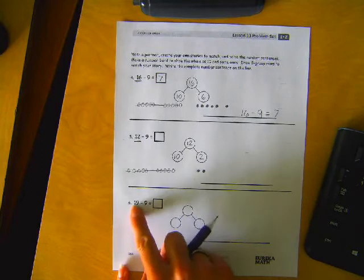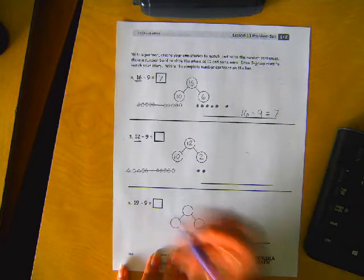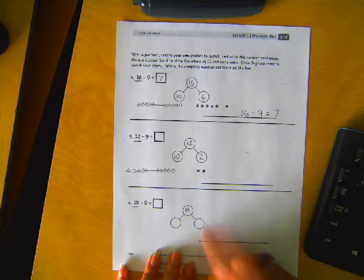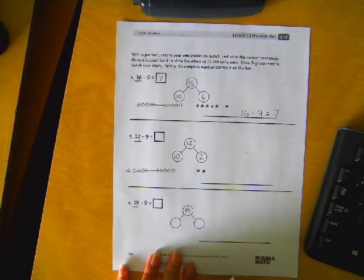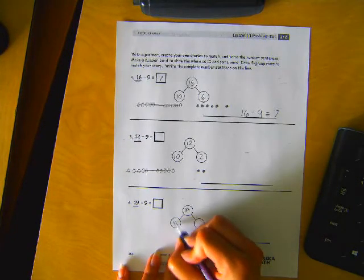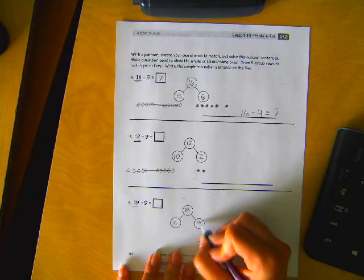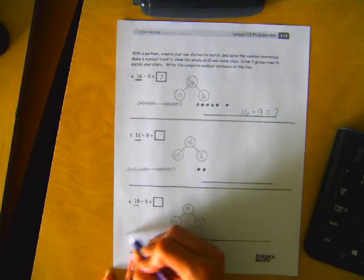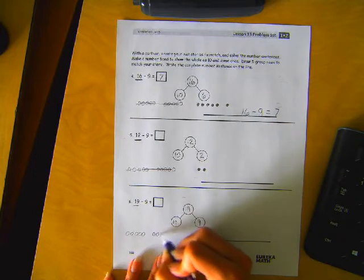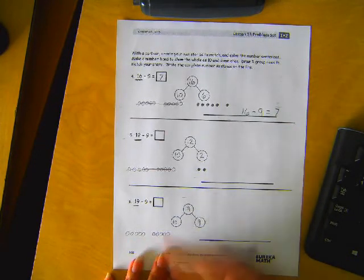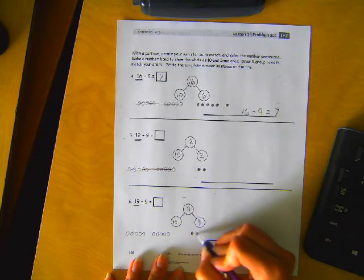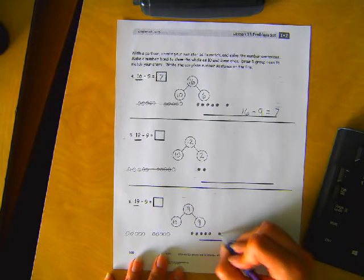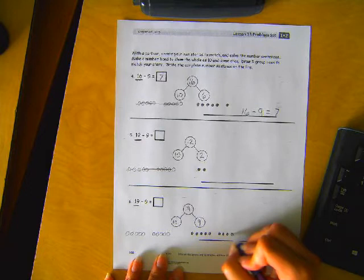Okay, this one is 19 minus 9 equals blank. I'm going to take that first number and break it up into some tens and ones. 19 is made up of one ten and nine ones. Here's this, well let's draw it out first. Here's my ten. Here's my nine.